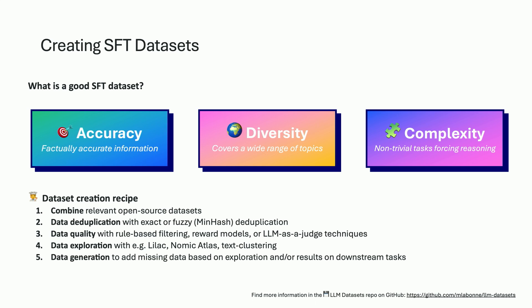Then you have data quality filters using different techniques — it can be rule-based filtering, for example removing every row where you have 'as an AI assistant I cannot,' because people hate it. But you can also use more clever techniques like reward models or LLM-as-a-judge to evaluate the quality of each sample and filter out the bad ones. Then you can use data exploration with tools like Nomic Atlas and text clustering for topic visualization, to get ideas on how to improve the dataset, and then go back to data generation and start the process over again.